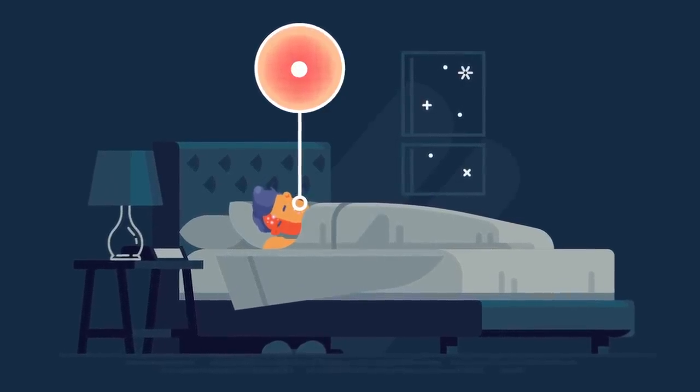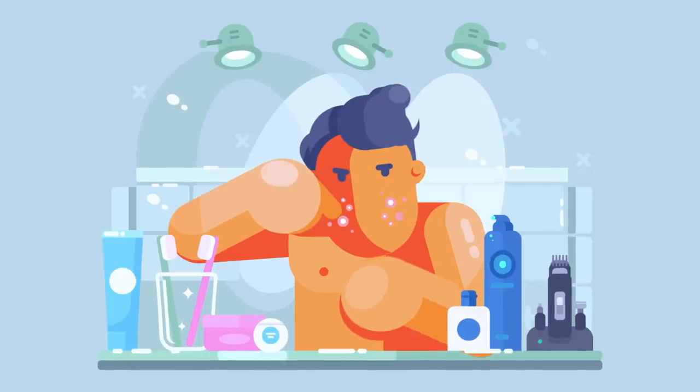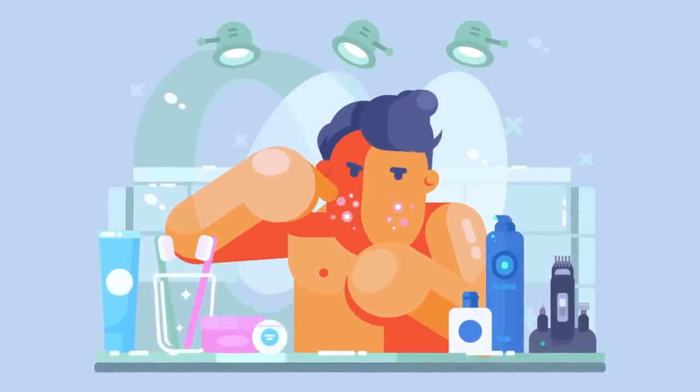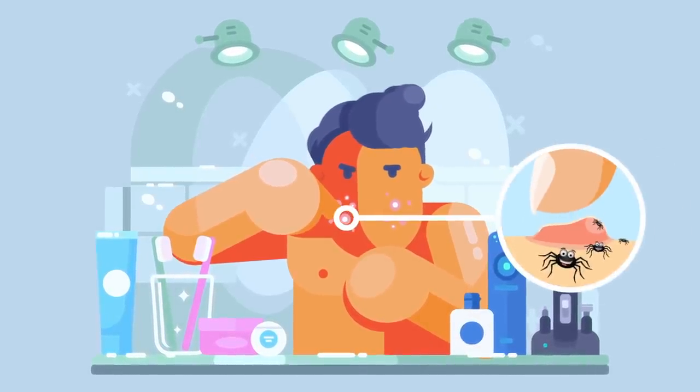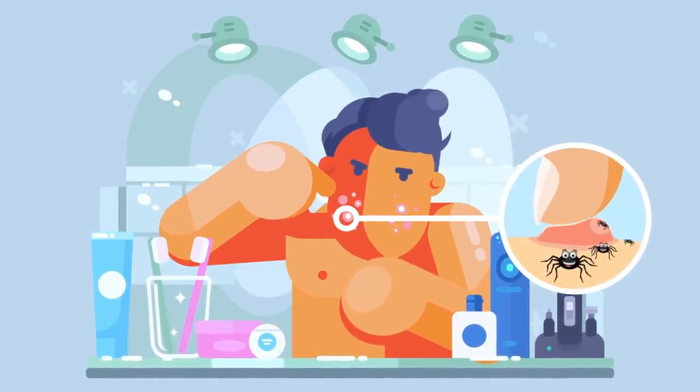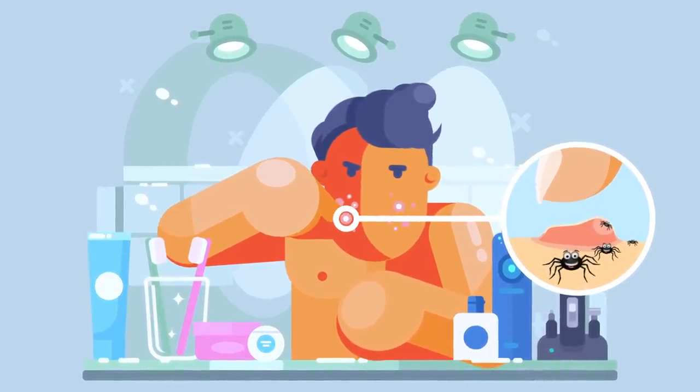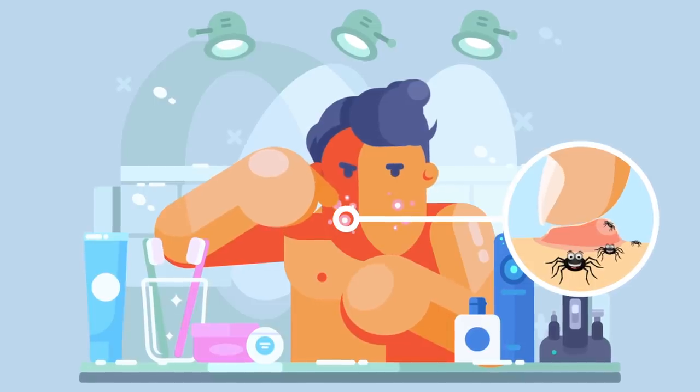and over time it gets bigger. Then one day they decide enough is enough, and in front of the bathroom mirror they go at it with their fingers, with the intention of popping the beast. To their utter disgust, there's no pus or blood. Instead, what comes out is a stream of tiny insects.